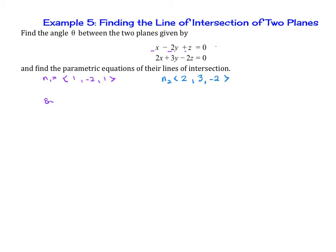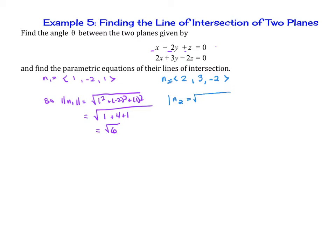We're going to do these in pieces. The magnitude of n1 is the square root of 1 squared plus negative 2 squared plus 1 squared, which is the square root of 1 plus 4 plus 1, or the square root of 6. For n2, the magnitude is the square root of 2 squared plus 3 squared plus negative 2 squared, which is the square root of 4 plus 9 plus 4, or the square root of 17.